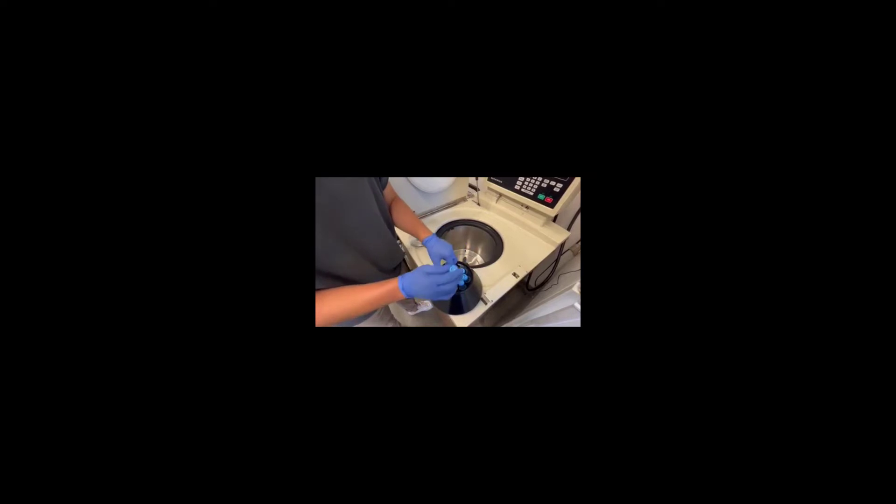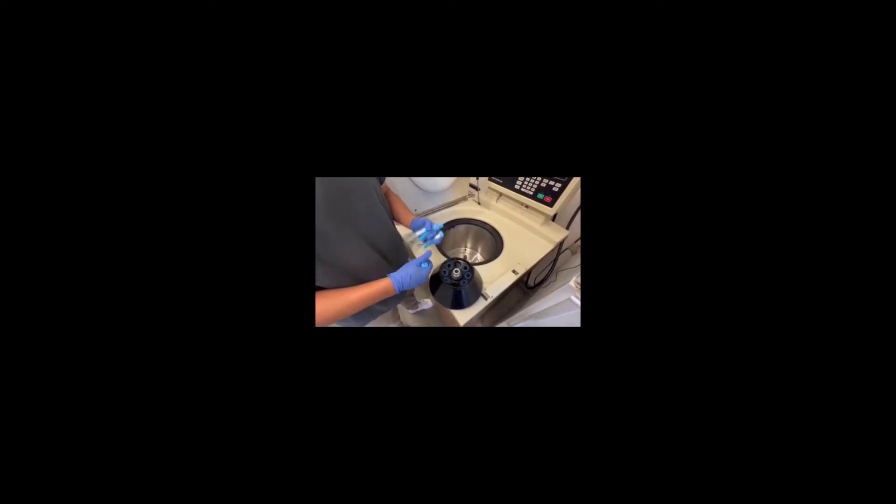Inside your rotor here is where the centrifuge tubes go. Something very important, and probably the most important thing to emphasize with centrifugation, is that you're going to need your weight to be evenly divided. So if you have an odd number of samples, you're going to need to fill up a blank to hold that weight in there.